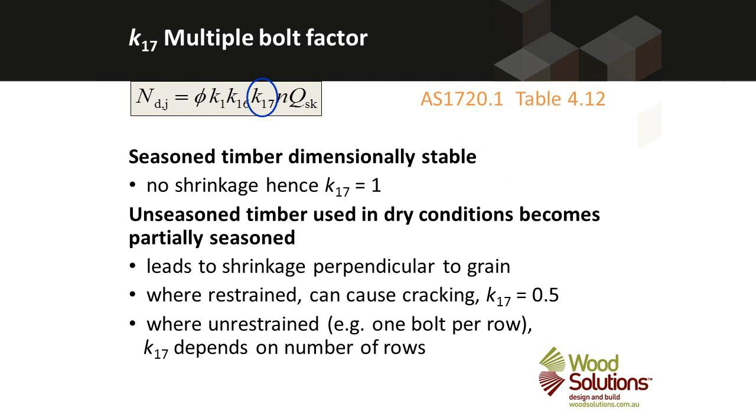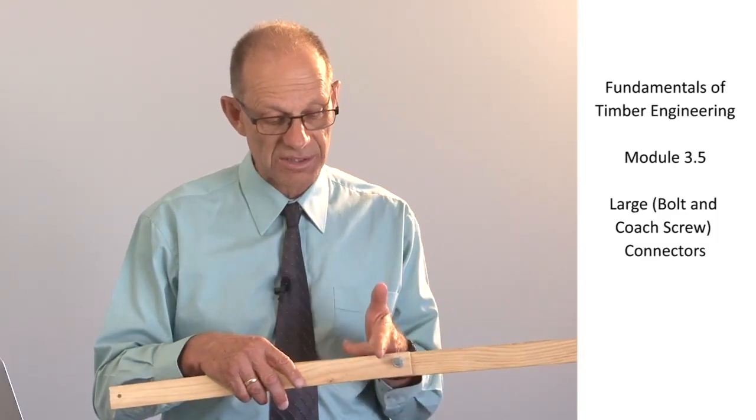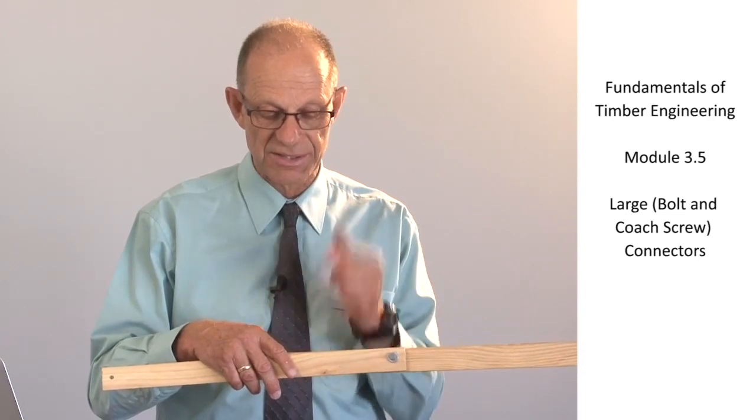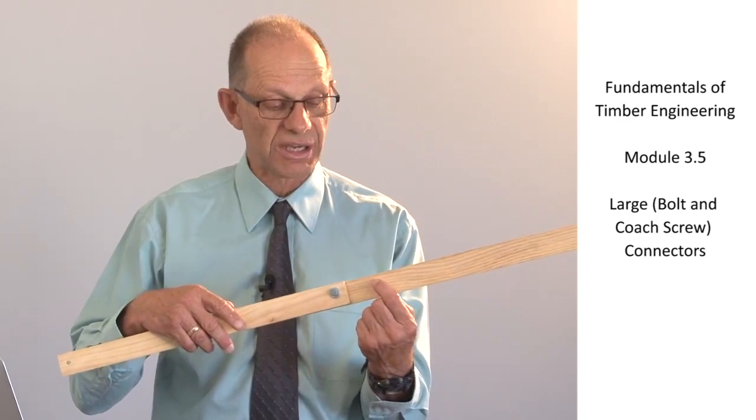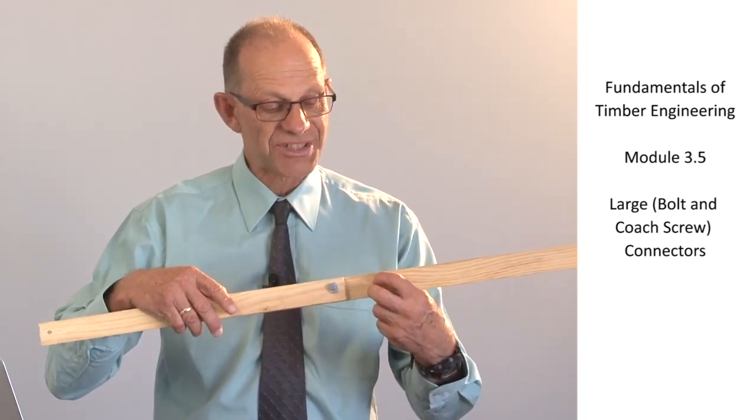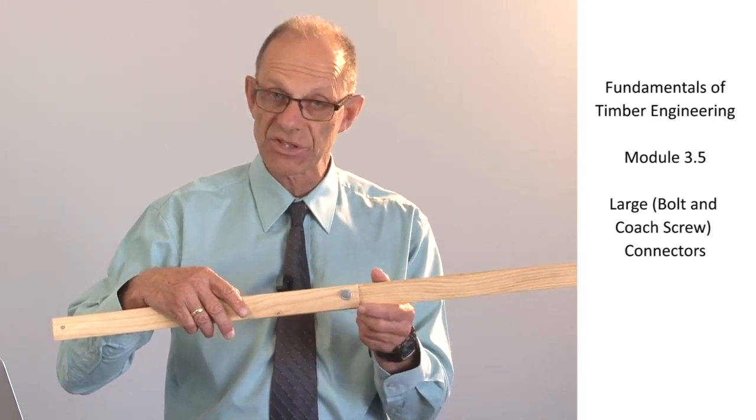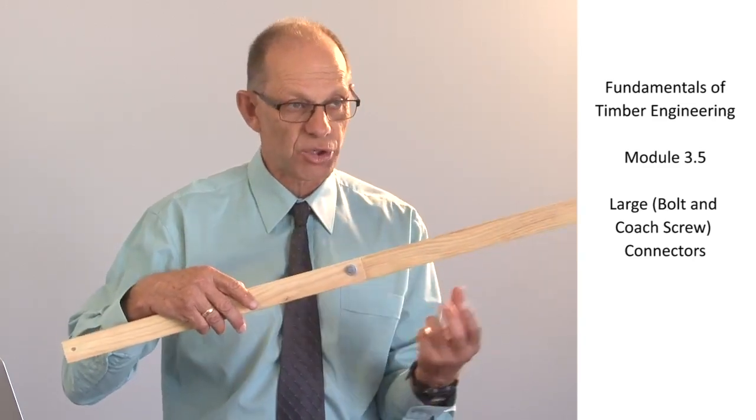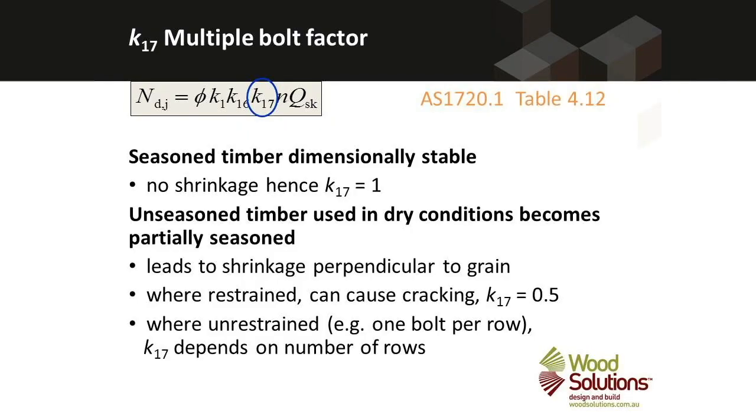K17 for bolts is quite different to the K17 for nails. With K17 for nails all you had to do was count the number of rows of fasteners and look up the table. With K17 for bolts we have to work out whether or not the bolts are actually going to stop the member from shrinking or swelling if it changes in moisture content. We call that transverse restraint and we use different K17 factors if the connection is going to give transverse restraint to the bolts.